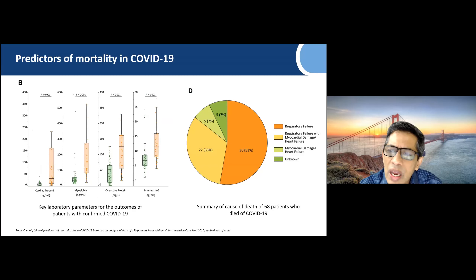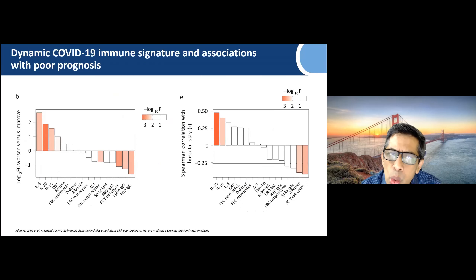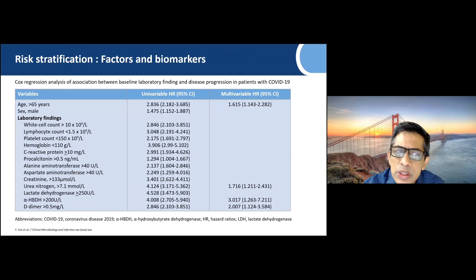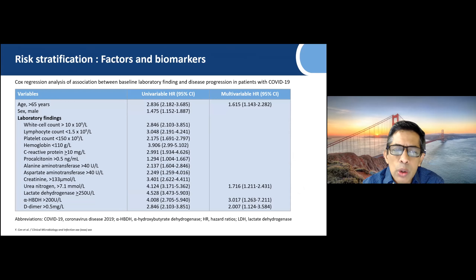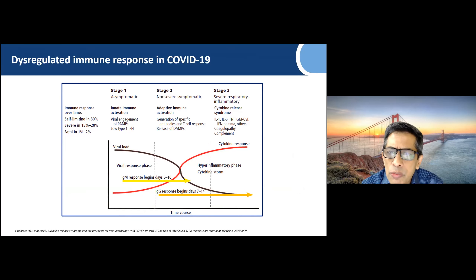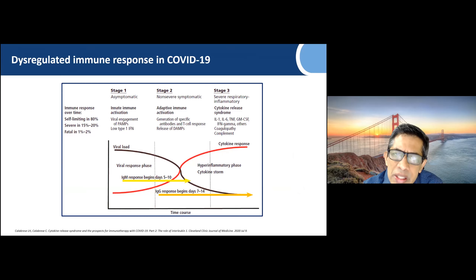We have various predictors of mortality — dynamic COVID-19 immune signatures and biomarkers associated with poor prognosis. There is stratification of hospitalized patients including age, male sex, white cell count, lymphocyte count, platelet count, hemoglobin, hsCRP, LDH, and D-dimer. Typically, SARS-CoV-2 is self-limiting in 80 percent, 15 to 20 percent experience severe disease, and one to two percent is fatal.